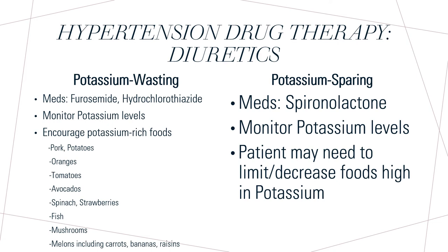Now, on to treatment for hypertension. Hypertension has several types of drug therapies, including diuretics, beta blockers, and ACE inhibitors. There are two types of diuretic therapy: potassium wasting and potassium sparing. With diuretic therapy, it is important to monitor potassium levels because you do not want potassium to be too high or too low. Potassium wasting diuretics are commonly known as loop diuretics.